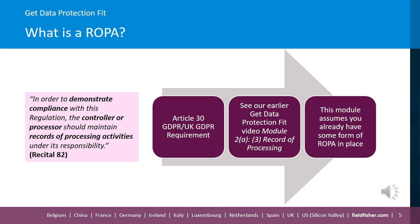It is a requirement under the GDPR, and controllers and processors each have their own documentation obligations. A ROPA is a good indicator of how seriously a company takes its GDPR compliance, in line with the accountability principle. A ROPA is also crucial for the preparation of data protection impact assessments. Pursuant to Article 30, Section 3 of the GDPR, it must be in written or electronic text form.